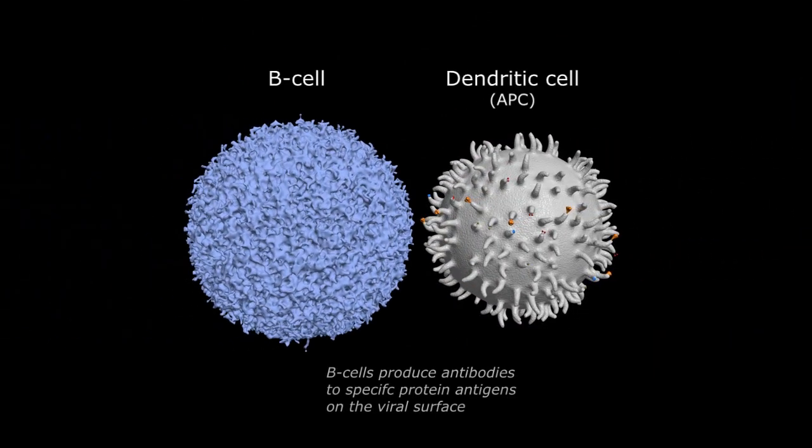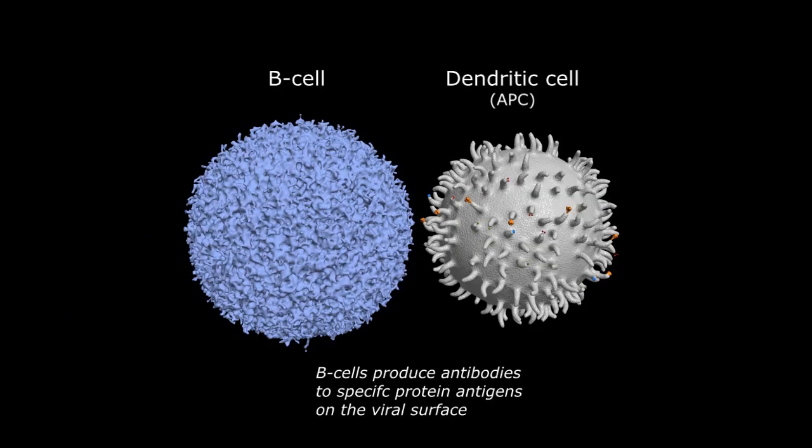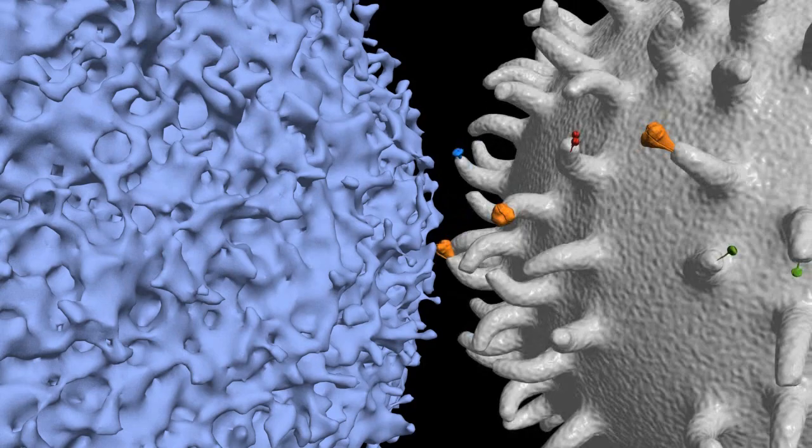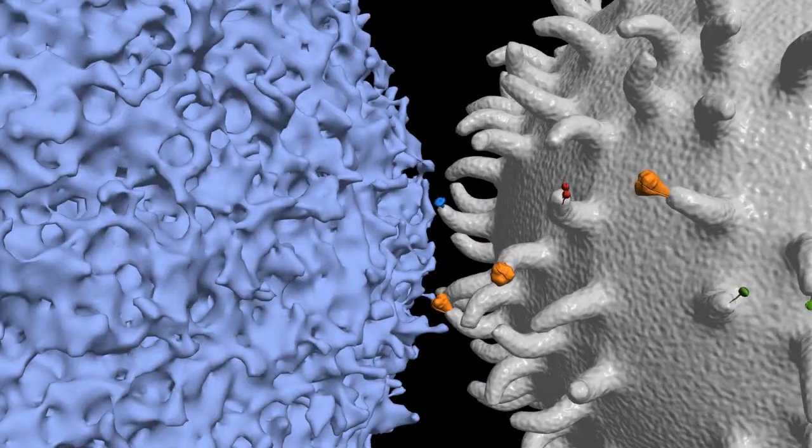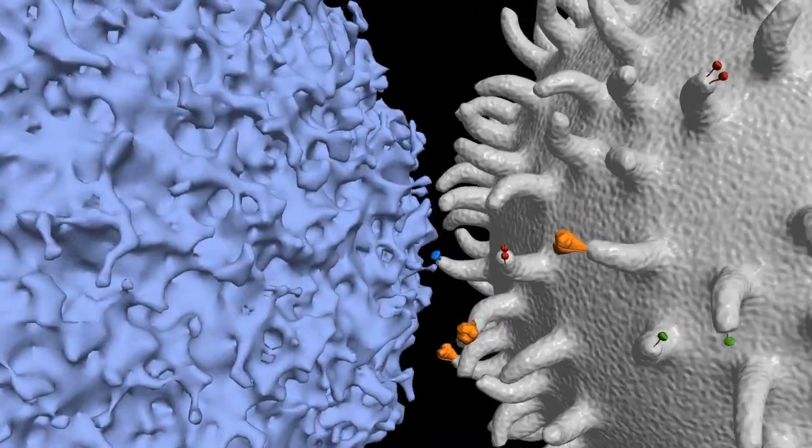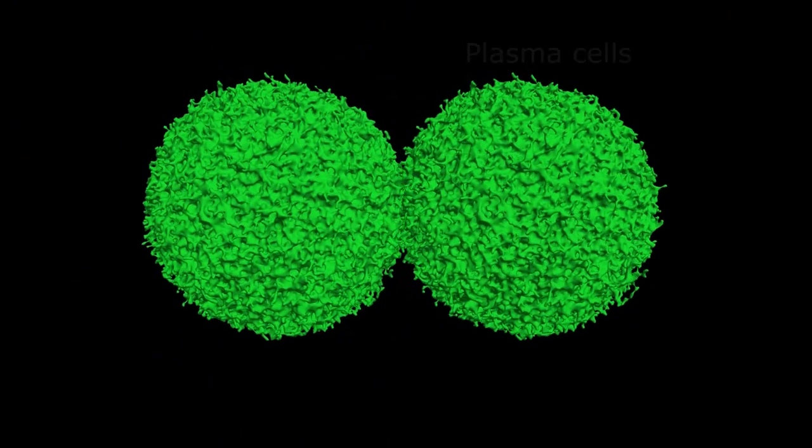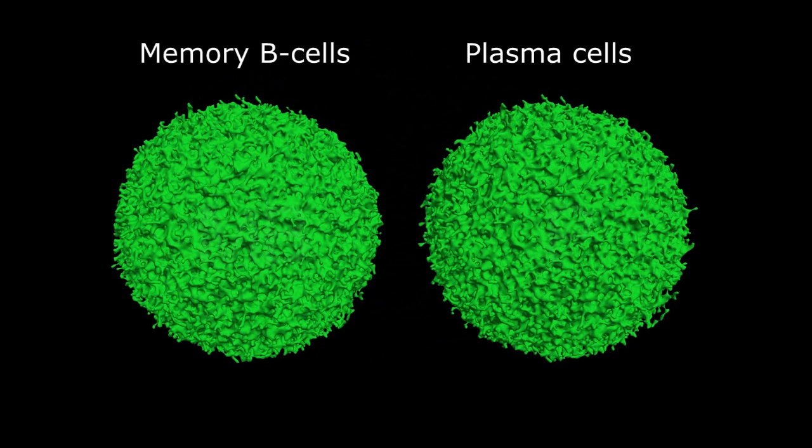The B cells analyze the various viral antigens and develop antibodies that are specifically designed to attach to the freely circulating viral particles. One B cell line may produce antibodies to the spike protein, another to the envelope, and others to the nucleocapsid and membrane protein. Once trained, each of these B cells turns into plasma cells or memory B cells.